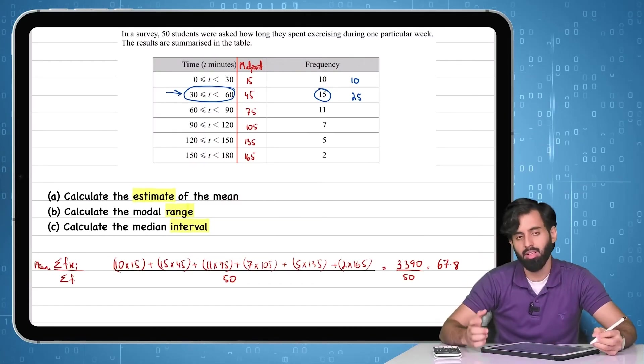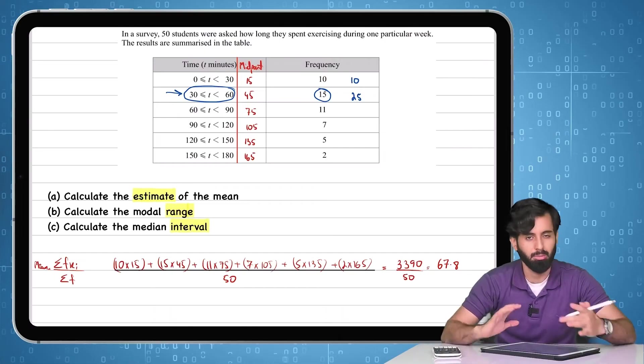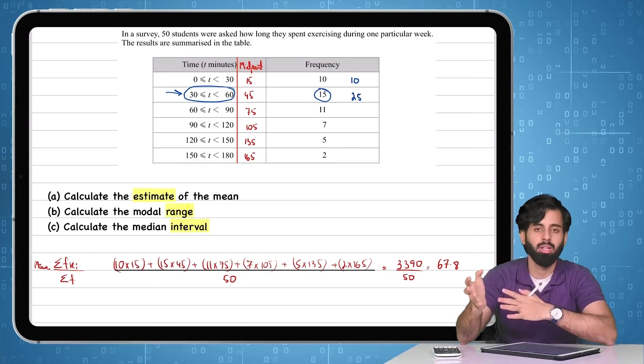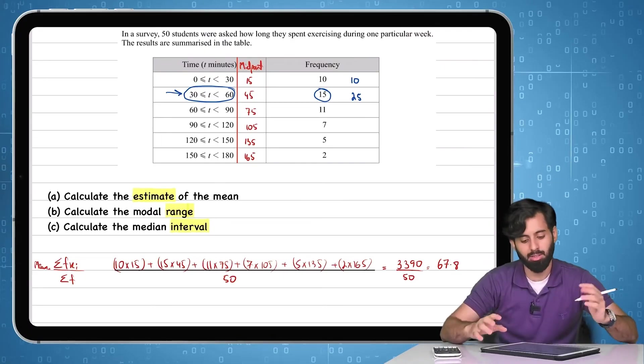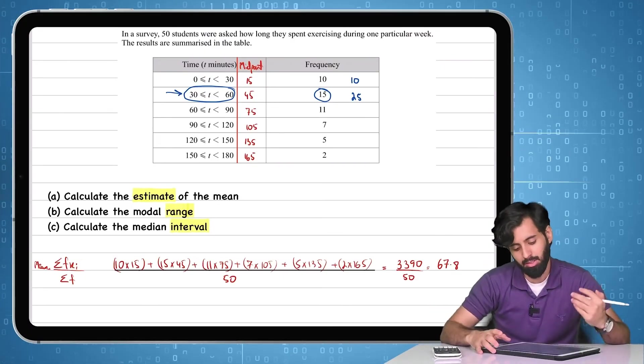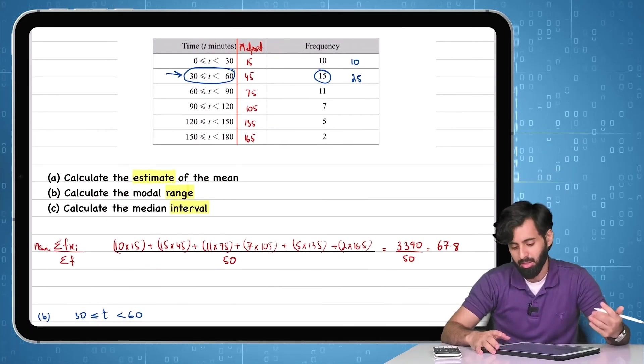By the way, there's no standard rule that the modal range is going to be the same as the median interval. That's not the case. But here, it's just a coincidence that the modal range and the median is the same. So again, you're going to take 50% of the total frequency.